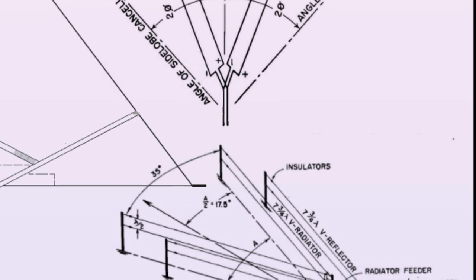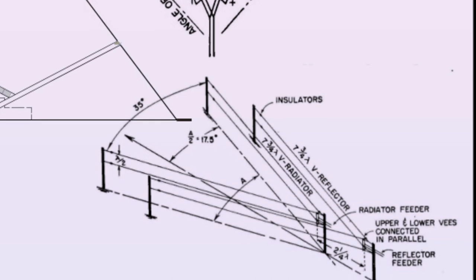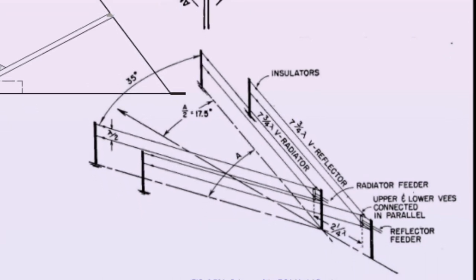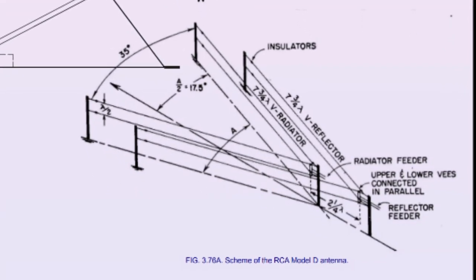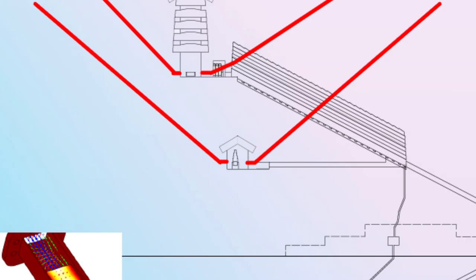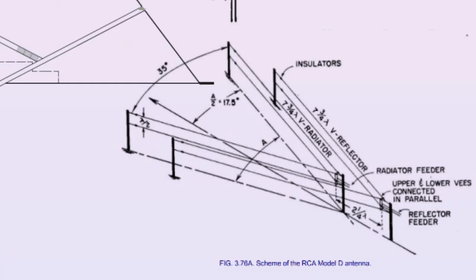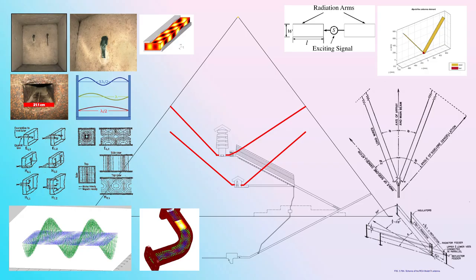Whatever information you want to send, you amplify and modulate it onto that carrier signal. Whoever's receiving can then tune into the carrier and demodulate it to retrieve the information. The point is: you have one antenna creating a carrier signal and a second antenna that modulates and amplifies it. I've shown examples of modern V-dipole antennas you can compare to the Great Pyramid setup.